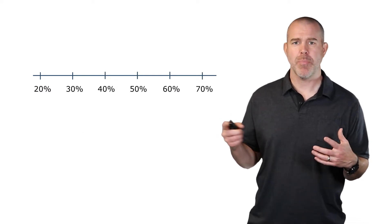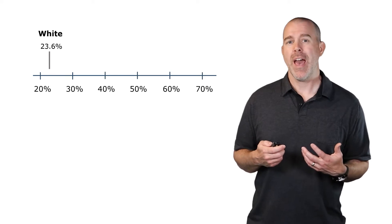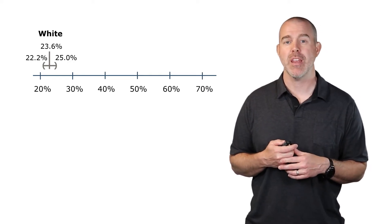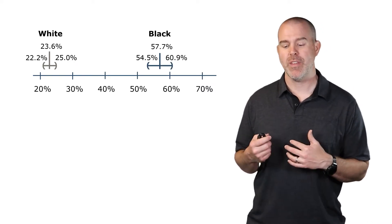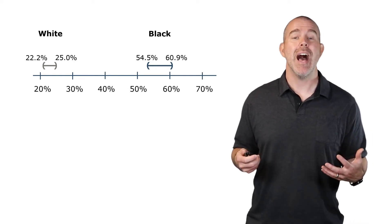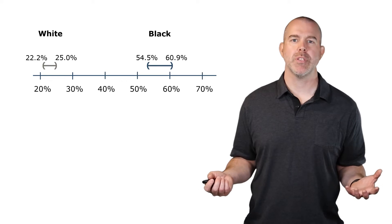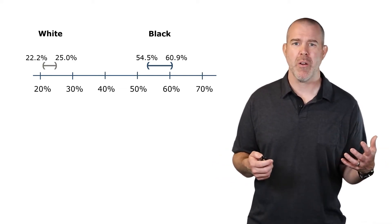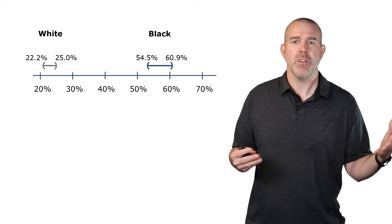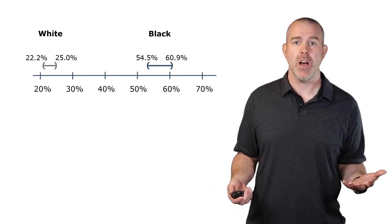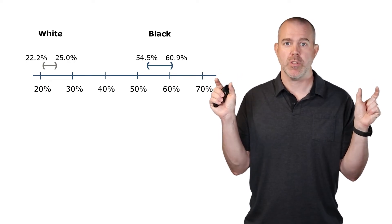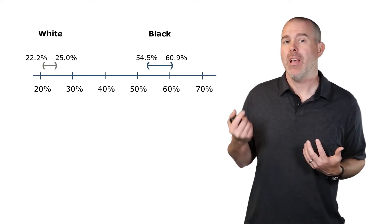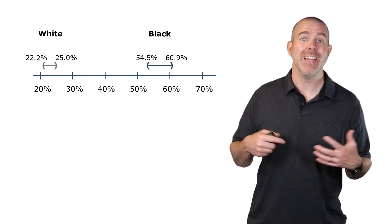Visualizing this on a discipline rate axis: white students at 23.6% with the margin of error gives an interval from 22.2% to 25.0%. Black students at 57.7% with their margin of error gives 54.5% to 60.9%. The white confidence interval tops out at 25%, while the black confidence interval bottoms out at 54.5% — clearly these are very different intervals.